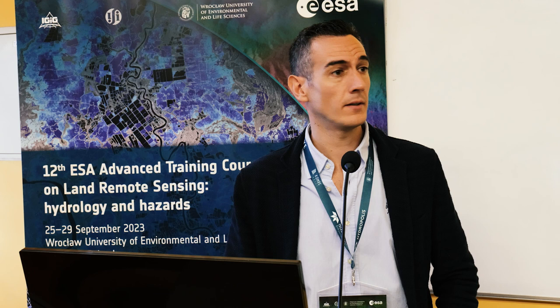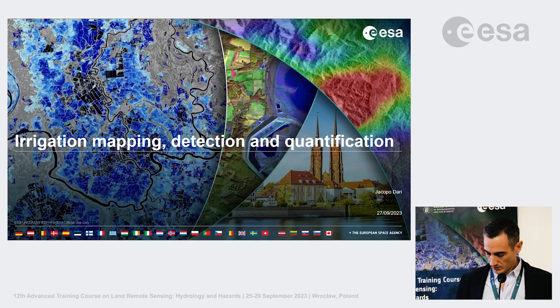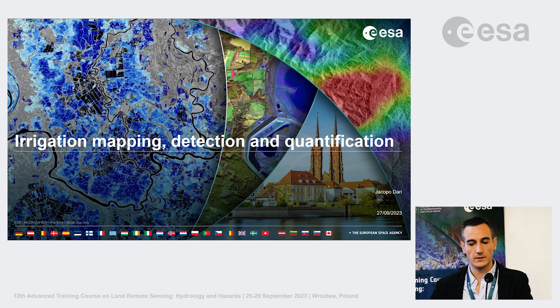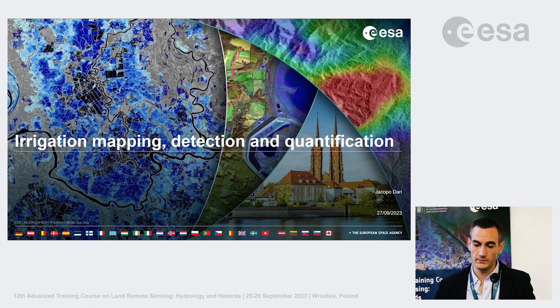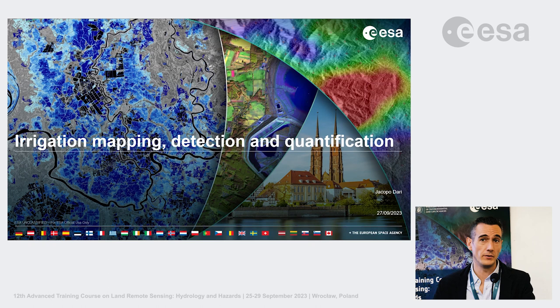Good morning everybody. I am Jacopo Dari. I work at the University of Perugia and at CNR IRPI, which is located in Perugia as well. It's a research institute — the name stands for National Research Council of Italy, Research Institute for Geo-Hydrological Protection. As background, I am a civil engineer and essentially a hydrologist.